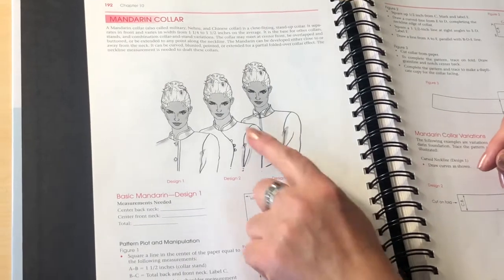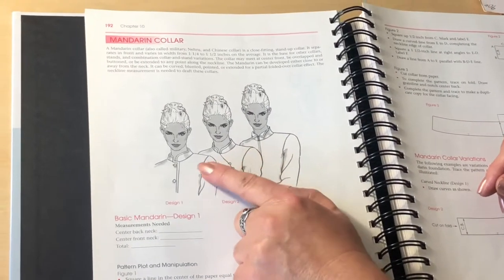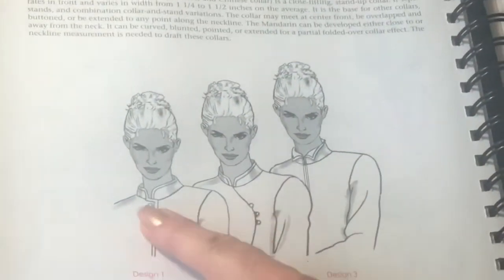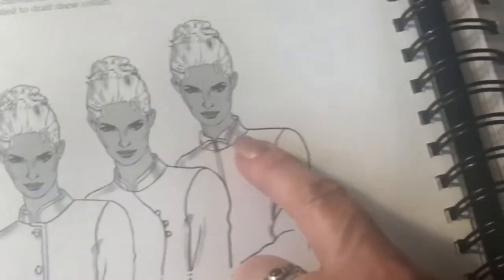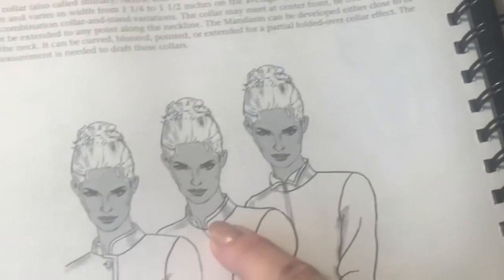The Mandarin collar looks like this. As you can see, all three are kind of my Mandarin collar. This one is the wing collar, the tuxedo collar, which is developed from the same structure.